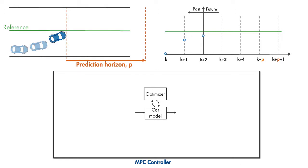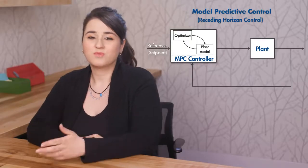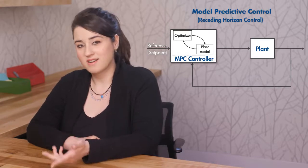Because of the forward-moving nature of the prediction horizon, MPC is also referred to as receding horizon control. Here we've discussed MPC's working principles using the car example.